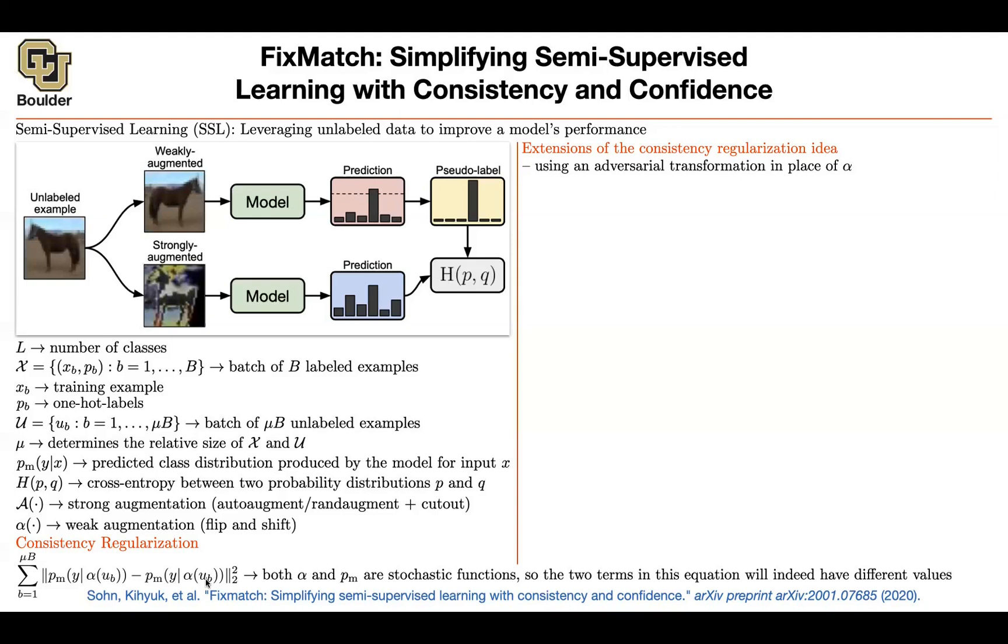One of them, the mean teacher method—perhaps the model on the left was a moving average of the models on the right. You can replace this mean squared error with a cross-entropy loss, which was the previous paper that we covered. You can use stronger forms of augmentation.